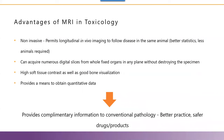Advantages of MRI in toxicology: it is not invasive, permits longitudinal in vivo imaging to follow disease in the same animal, yields better statistics and requires fewer animals. It can acquire numerous digital slices from formalin-fixed organs in any plane without destroying the specimen. High soft tissue contrast as well as good bone visualization provides a means to obtain quantitative data and provides complementary information to conventional pathology, ultimately contributing to better practice and safer drug products.